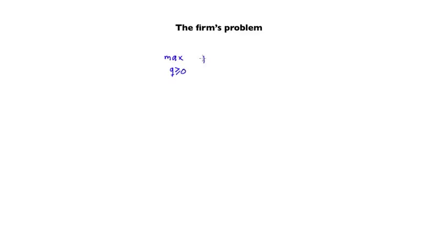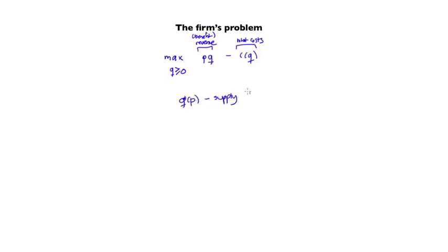As we described before, the problem of the firm that is going to give us the supply function is to maximize over q ≥ 0: p times q minus c times q. Remember that this is revenue, which you can think of as the benefit of producing, and these are the total costs. We're going to denote the solution by q star of p. This is called the supply function of the firm — how much it wants to produce at any price p.